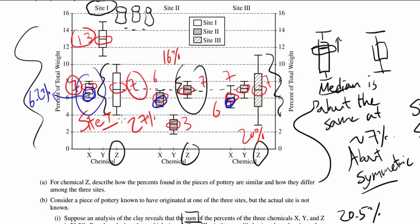And similar reasoning for Chemical Z. If you have about 7 percent for Chemical Z, since all of the medians are about 7 percent, you are not gonna know which site it is from.